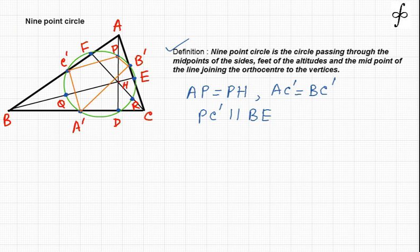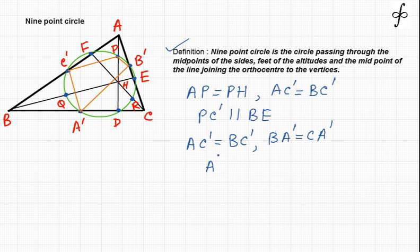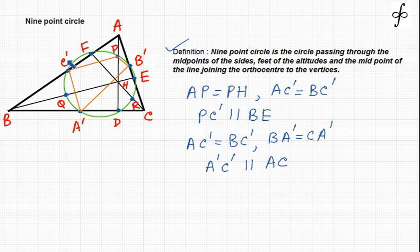P is the midpoint of AH and C dash is the midpoint of AB, so on joining them PC dash should be parallel to BH, which is the same as parallel to BE. We can also see that AC dash equals BC dash and BA dash equals CA dash. Since A dash is the midpoint of BC and C dash is the midpoint of AB, on joining A dash and C dash, this segment must be parallel to AC.